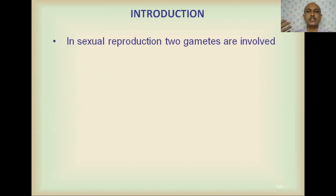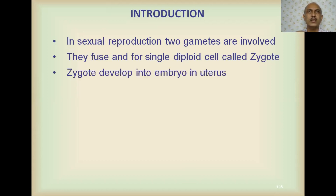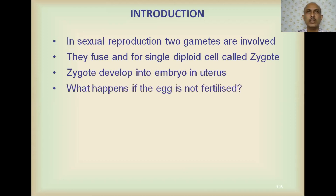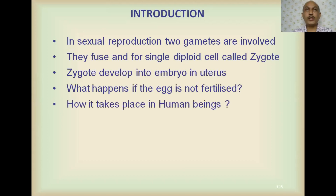In sexual reproduction, two gametes — male and female — fuse and produce a single diploid cell called a zygote. The zygote develops into an embryo in the uterus, as studied in human beings. Today we are discussing what happens if the egg is not fertilized, compared to the last session where we discussed what happens if the egg is fertilized.